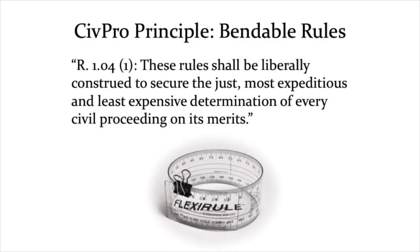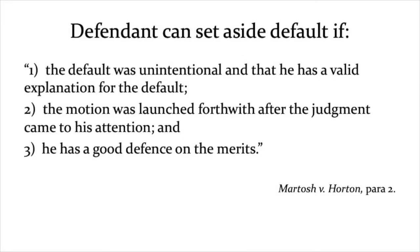Under Rule 19.08, you can set aside a default judgment on the basis of a three-part test: the default was unintentional and the defendant has a valid explanation for the default; the motion was launched forthwith upon the judgment coming to his attention; and he has a good defense on the merits. Horton does well enough on the second branch — he brought this quickly — but he fails branches one and three.